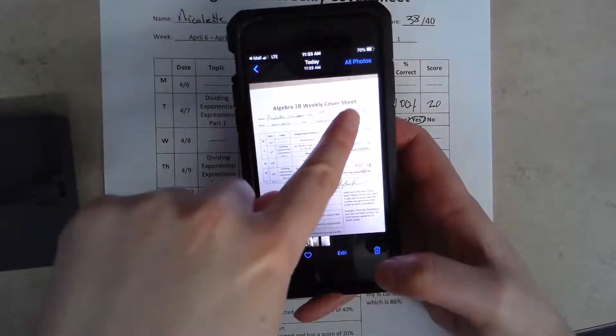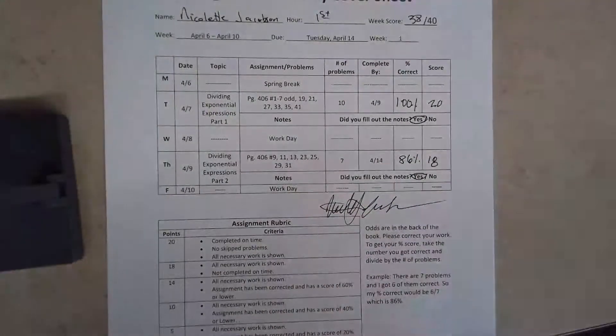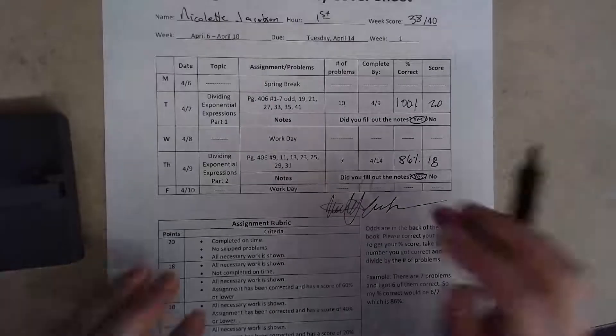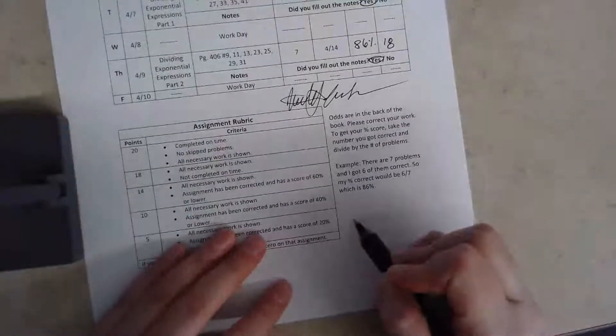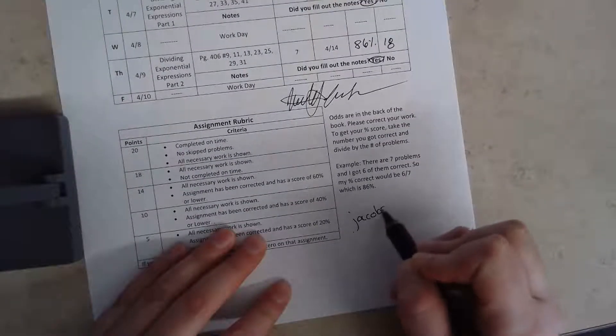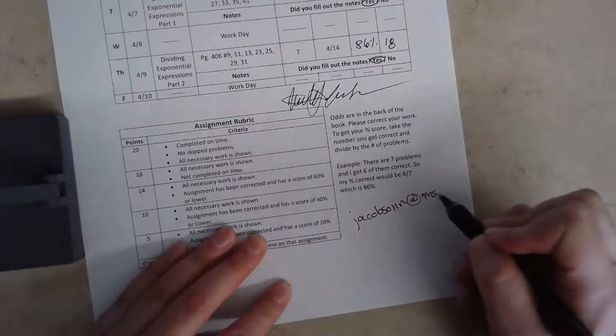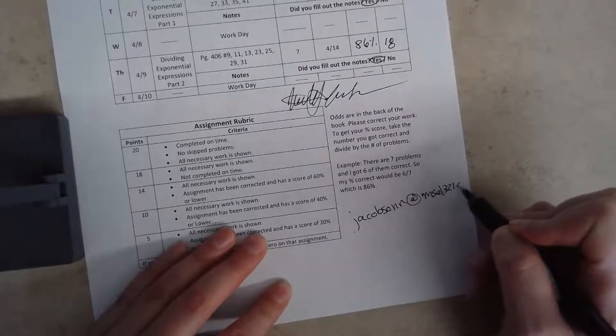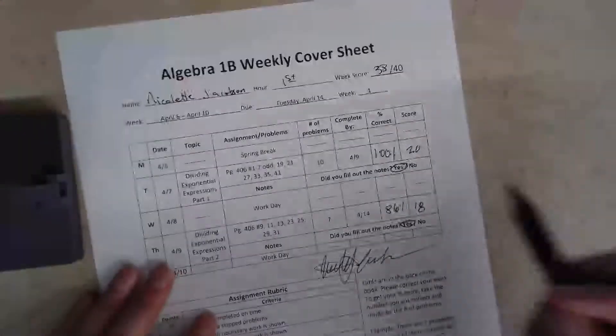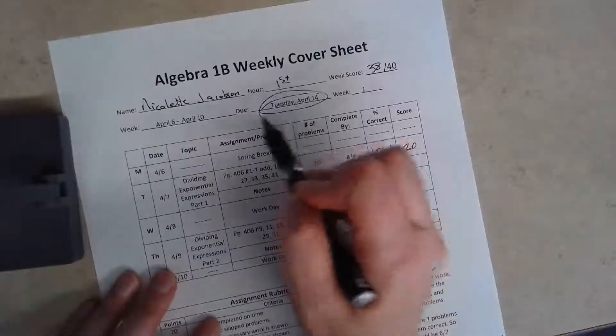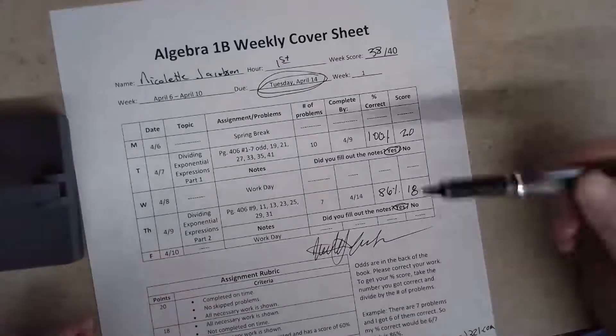I would take a picture of this, making sure that I had my total score and my parents signature visible. Then I would send that to the teacher, me, Miss Jacobson. So the email again is jacobsonn at madisonschooldistrict321.com.